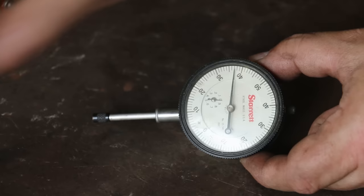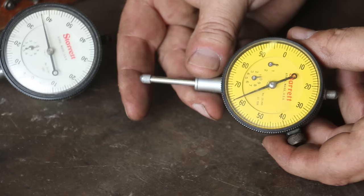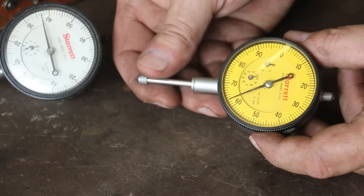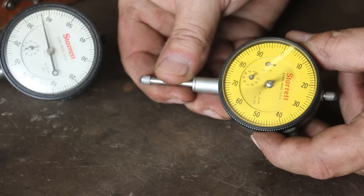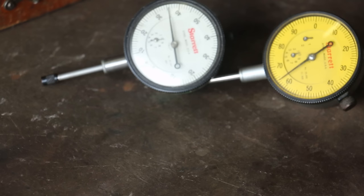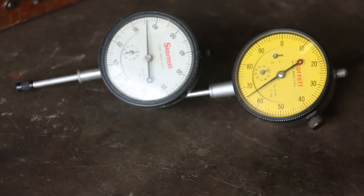They also make these in metric. This is a metric dial indicator. Basically each rotation of the dial is one millimeter and each increment on the dial is one one hundredth of a millimeter. So it works exactly the same, it's just calibrated for metric instead of inches. You can choose to buy either metric or English units.